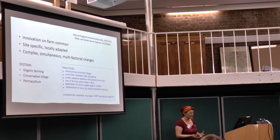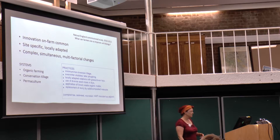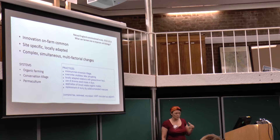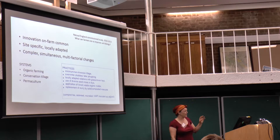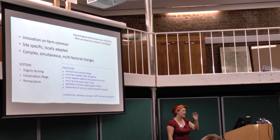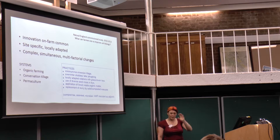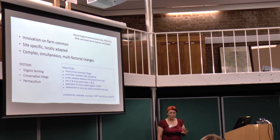That's great and challenging and fantastic, and also for research, a little bit problematic. The systems I would take farmers to see as good practice for soil management would almost certainly include organic farming systems — though not every organic farming system — conservation tillage systems in the fully integrated FAO definition, not just zero tillage but the integration of cover crops and attention to integrated farm management, and permaculture systems.